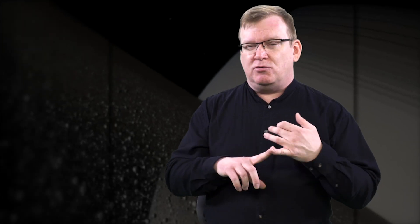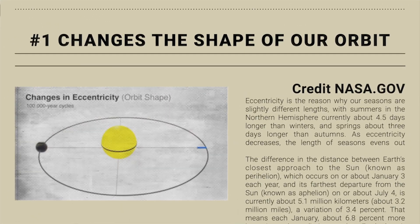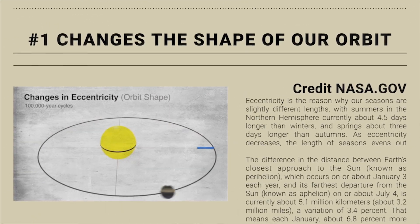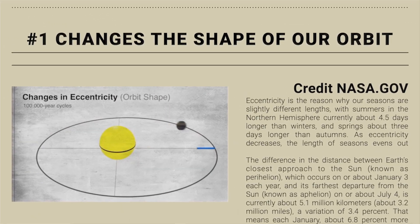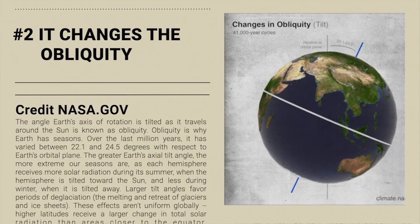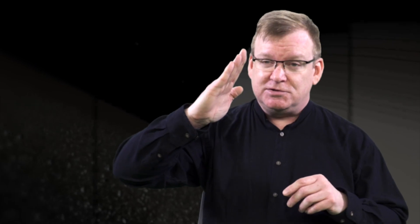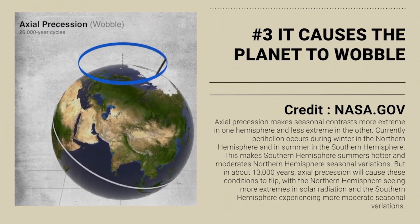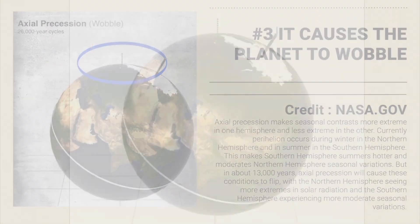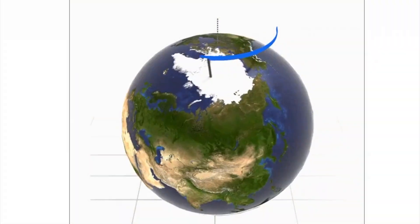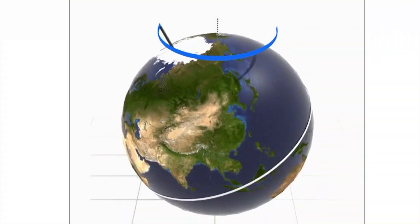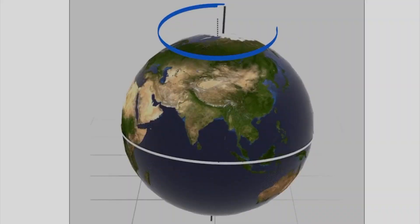It changes the shape of our orbit from more circular to more elliptical. It changes the obliquity, or the angle of Earth's axial tilt, and it causes the planet to wobble through a process called precession, which changes the timing of our seasons.